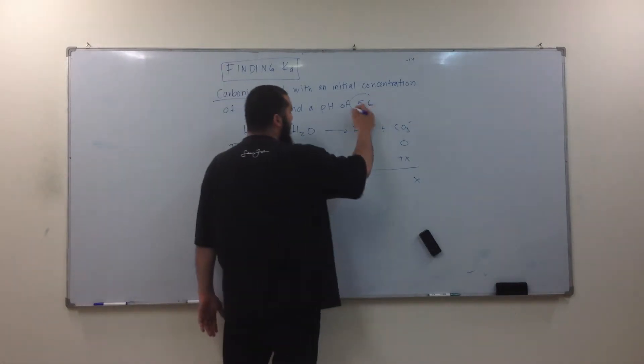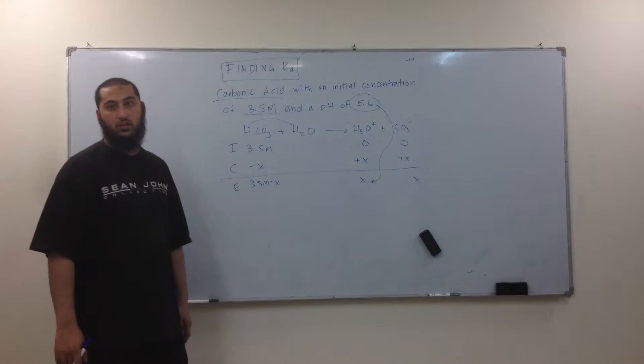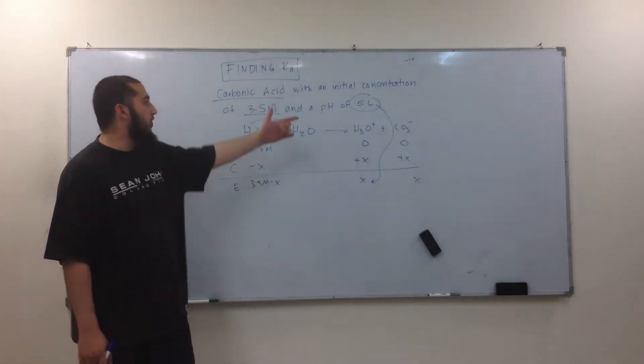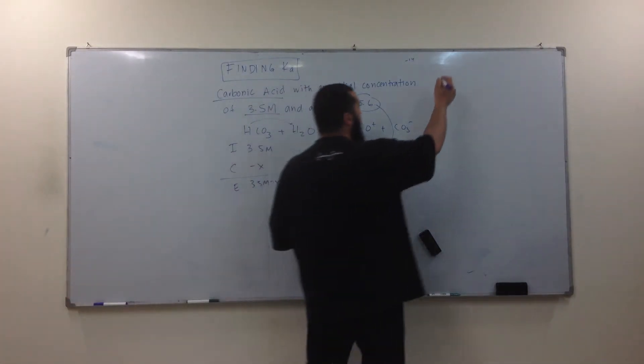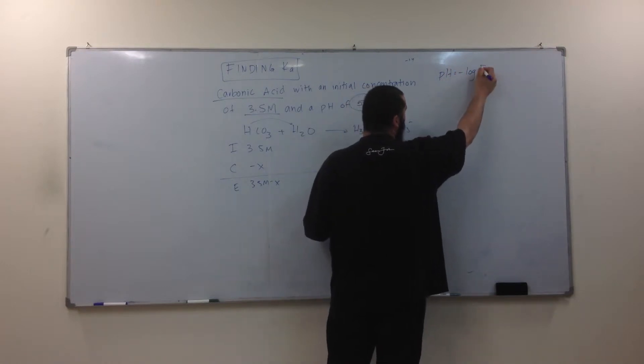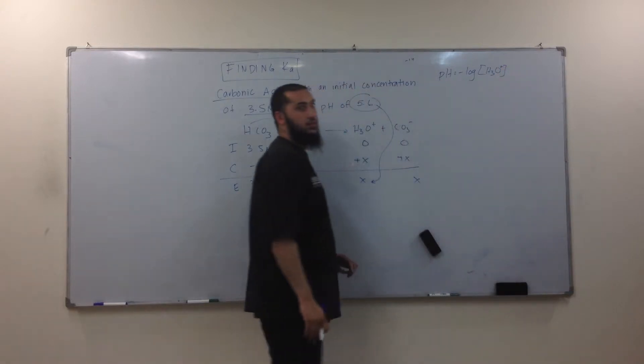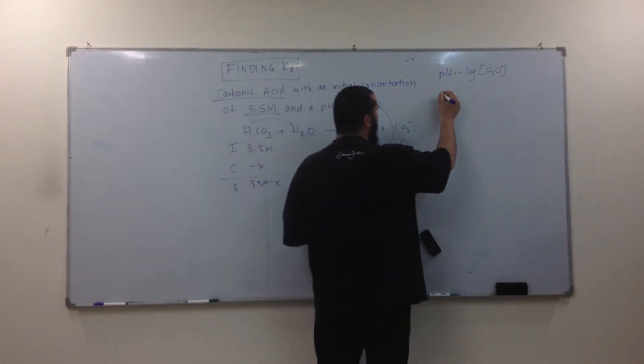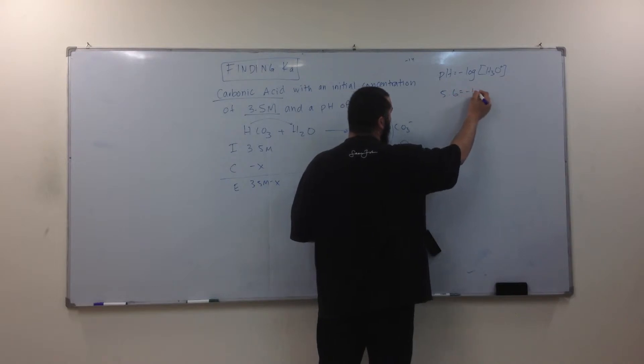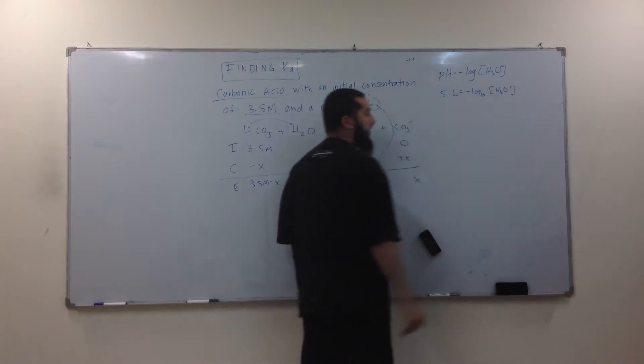So, if I know the pH, I can do this. Just bring it straight down. You can bring it straight down. So if my pH is 5.6, what is pH equal? pH equals negative log of the concentration of H3O+. Easy?